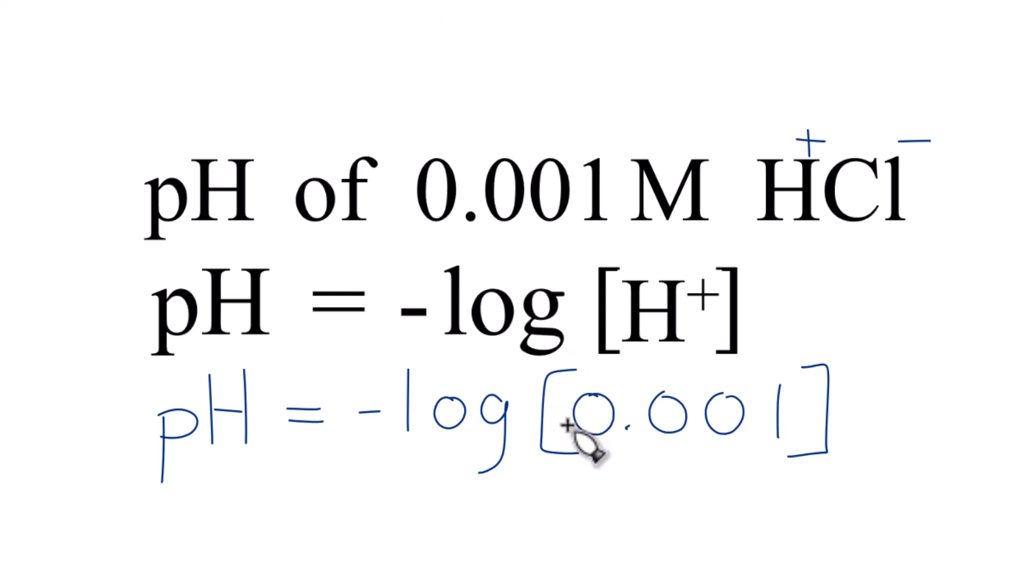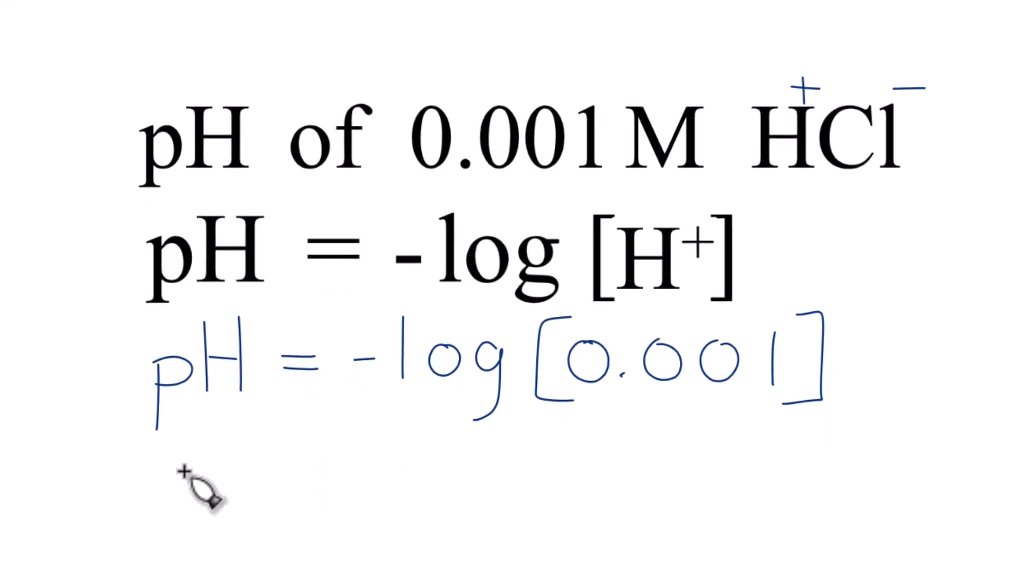So when we take the log of 0.001, we get negative 3. But this negative here, that'll cancel it out. We end up with pH equals 3.